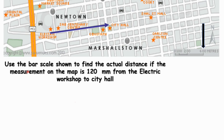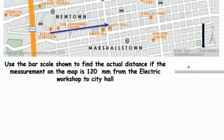So the question says: use the bar scale shown to find the actual distance, if the measurement on the map is 120 millimeters from the electric workshop to the city hall. They have measured those two points for us and it is 120. But then we don't have a scale, so we have to go to the bar scale and we measure.